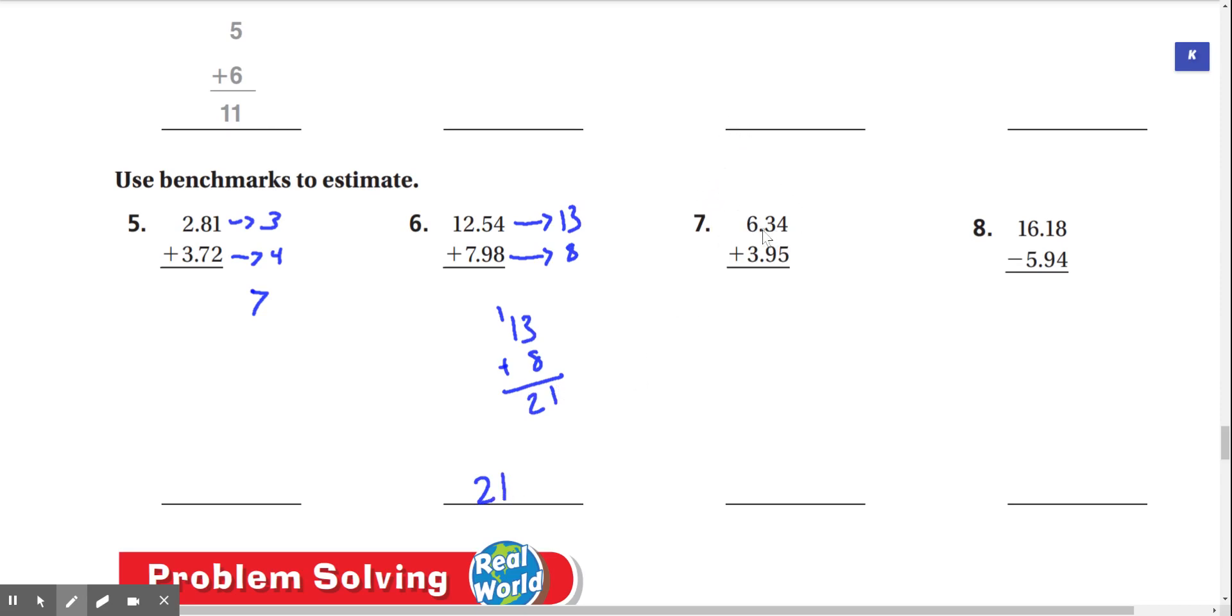Number seven, 6.34 plus 3.95. On a number line, if we look at 6.34, 6.34 is really close to 6. And 3.95 is really close to 4 on the number line. So 6 plus 4 is 10.